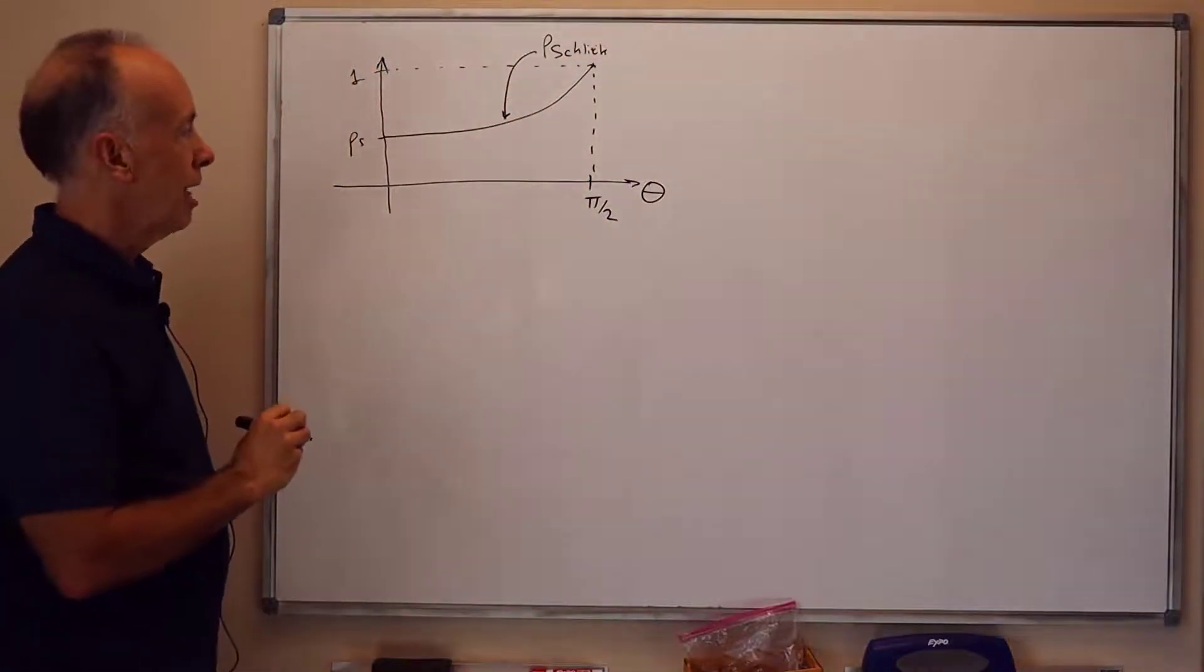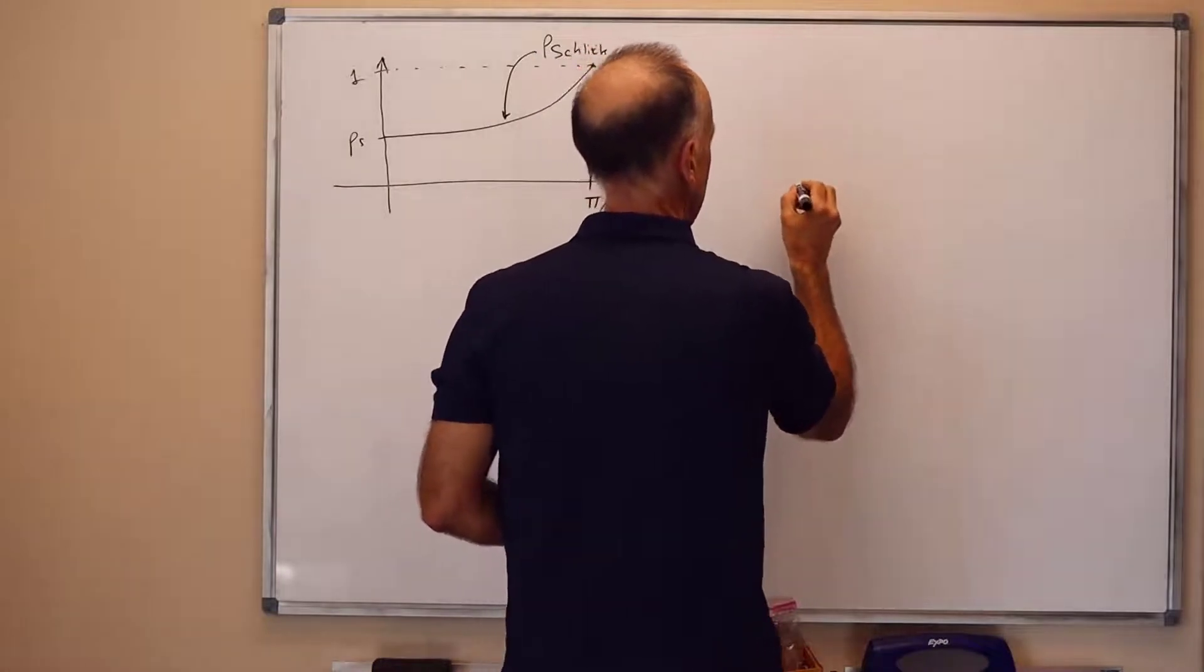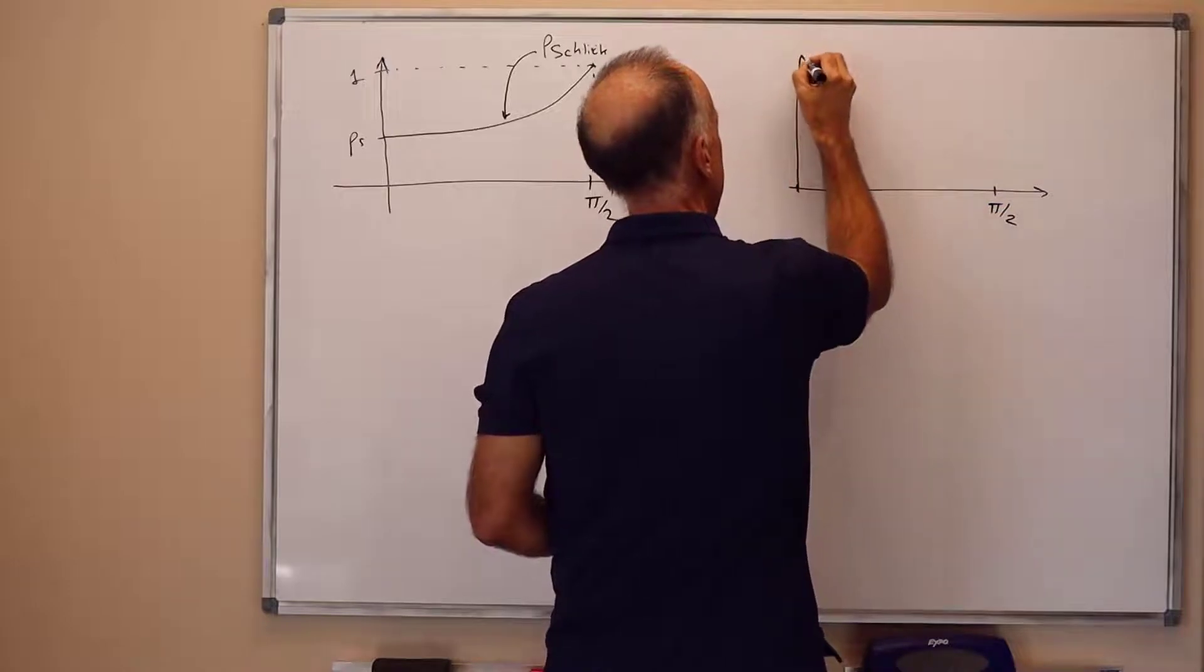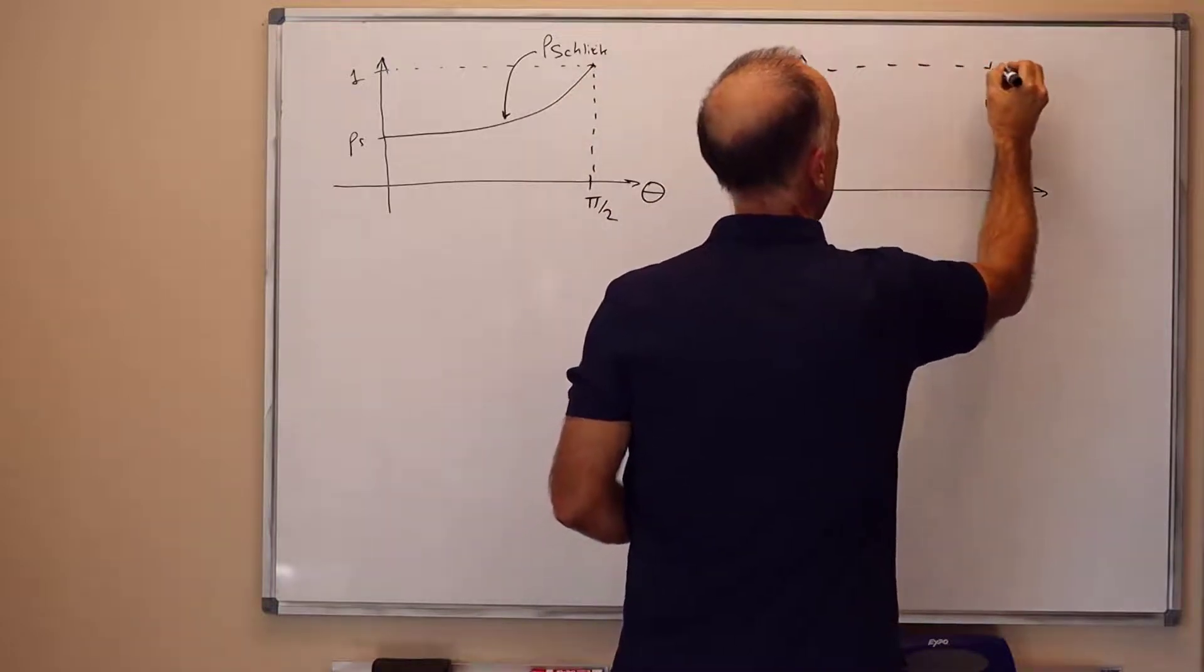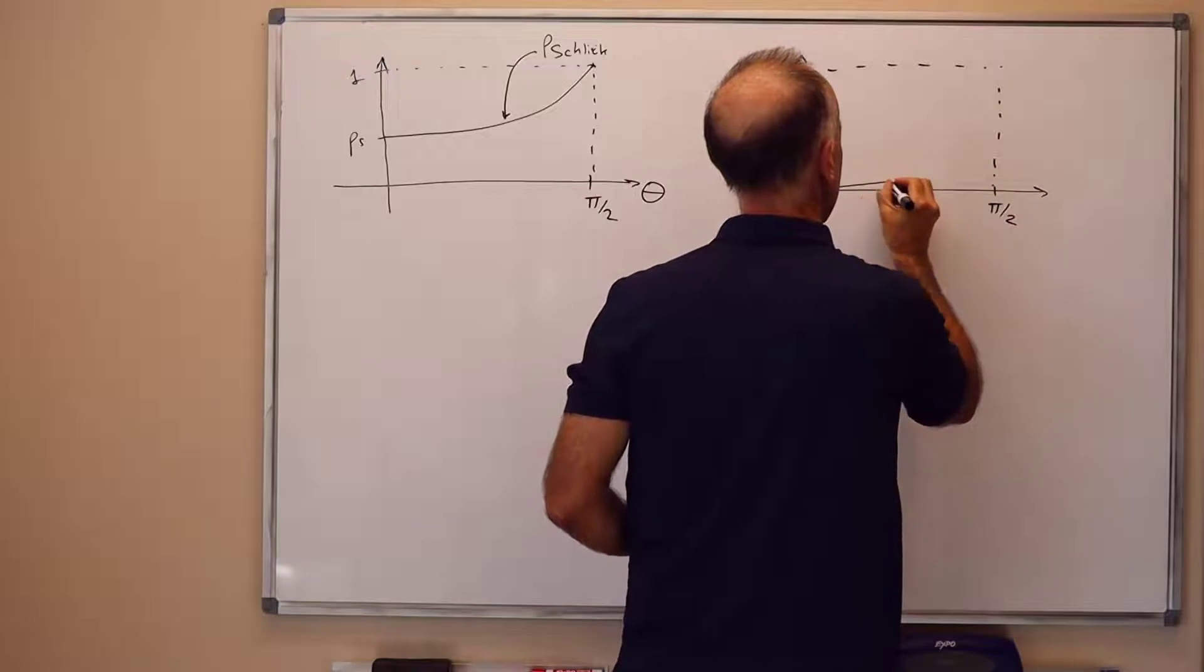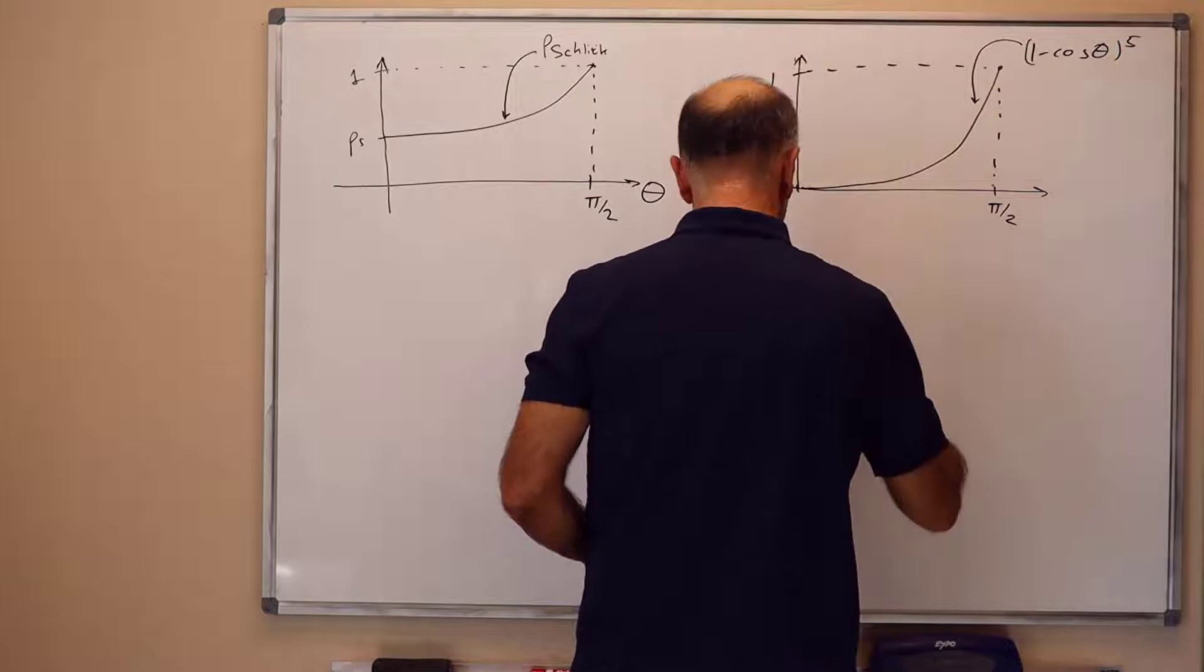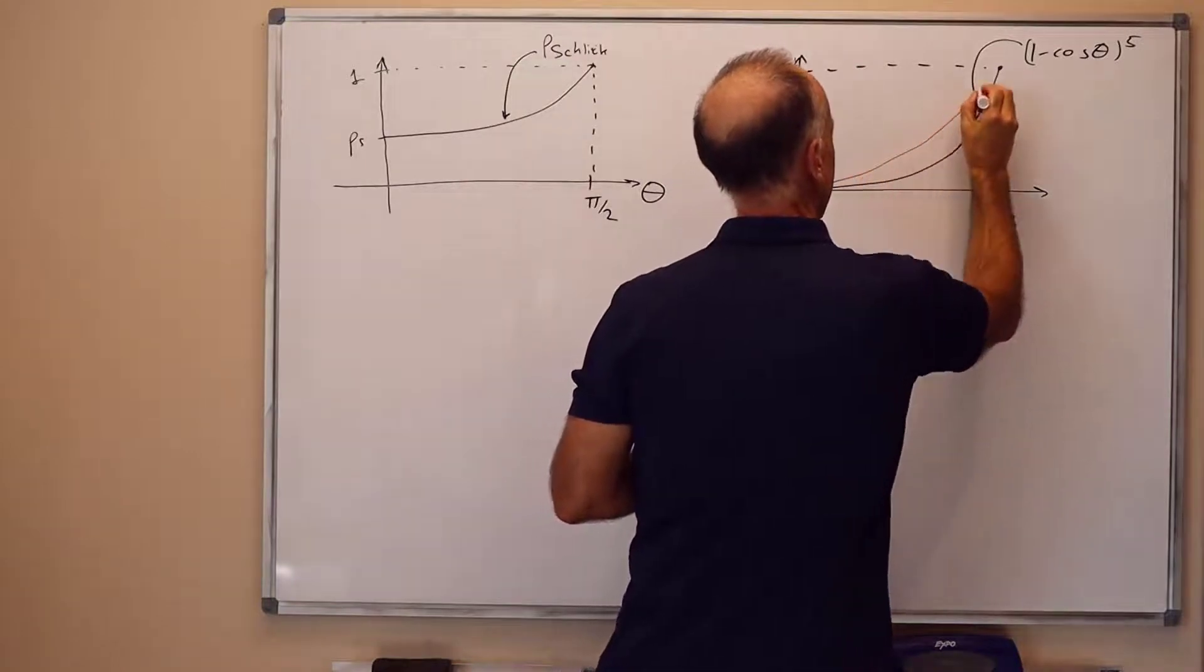So here I've redrawn for you the graph of Rho-Schlick. The formula for this is based on using the following. We're going to use a helper function, which is, the helper function is 1 minus cosine of theta raised to the power 5. So, this function here is 1 minus cosine of theta raised to the 5th power,